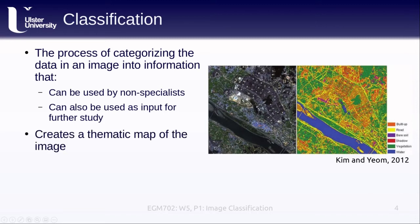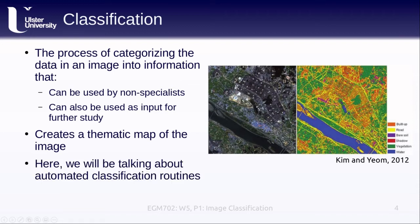The output of a classification routine is a thematic map of the image. You can see here an example of an image on the left, and a thematic map identifying each of the different land covers present in the image on the right. In this lecture, we're going to be talking about automated classification routines — that is, how we can make the computer do the work for us.